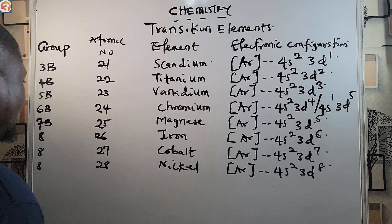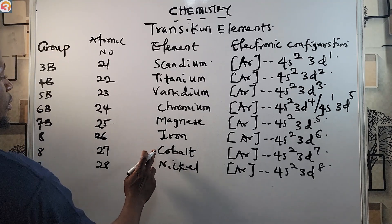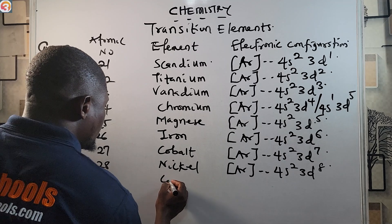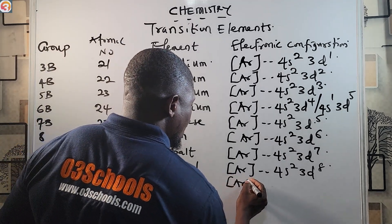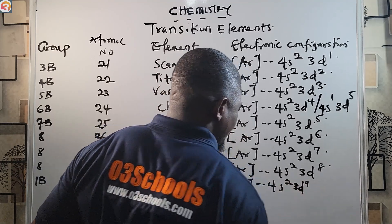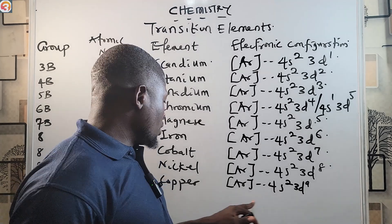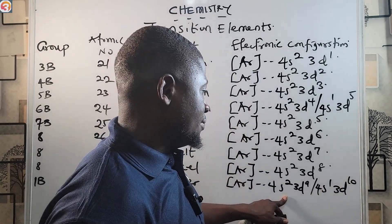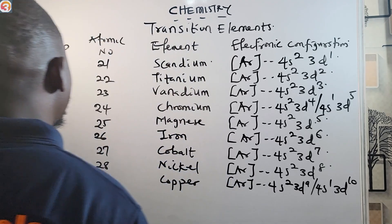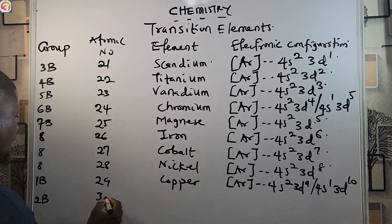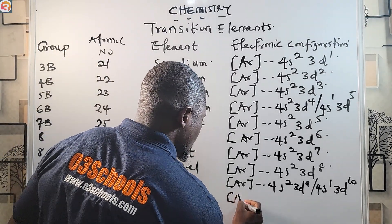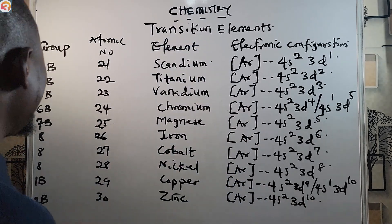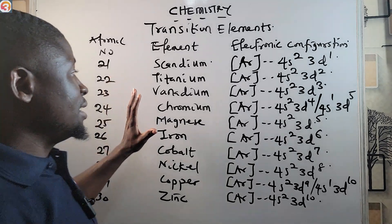Next is Copper — group 1B, atomic number 29. Its configuration would be [Ar] 4s2 3d9, but to achieve stability with a completely filled d orbital, one electron is promoted from 4s to 3d, giving [Ar] 4s1 3d10. Finally, Zinc — group 2B, atomic number 30 — with configuration [Ar] 4s2 3d10.